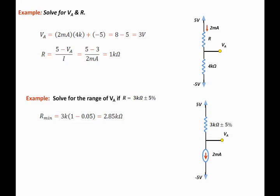To evaluate the maximum value we can state that R max is equal to 3k times 1 plus 0.05, which is 5% above the nominal value. That is 3.15 kilo ohms.